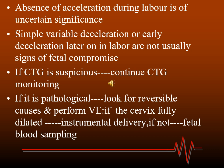However, if the variable or early deceleration is recurrent and prolonged, this may be significant. If CTG is suspicious, we may continue monitoring. If it is pathological, we must look for reversible causes such as uterine hyperstimulation or maternal hypotension, and perform vaginal examination to exclude cord prolapse and detect cervical dilation. If the cervix is fully dilated, instrumental delivery may be performed if other required parameters are met. If not fully dilated, the next step is fetal blood sampling.